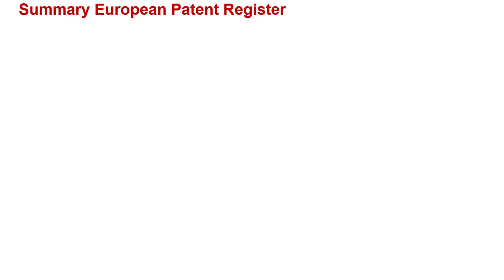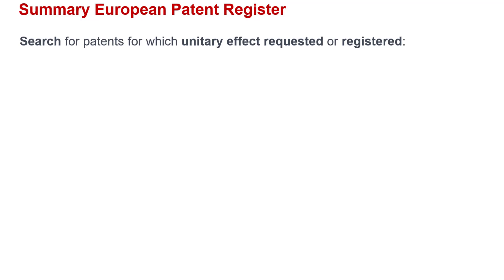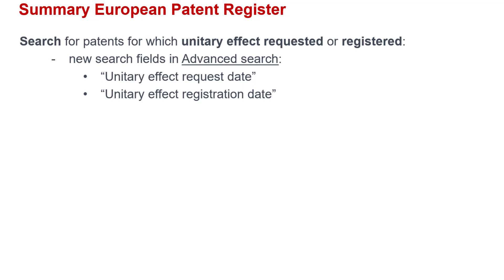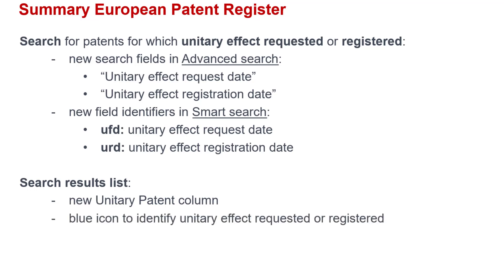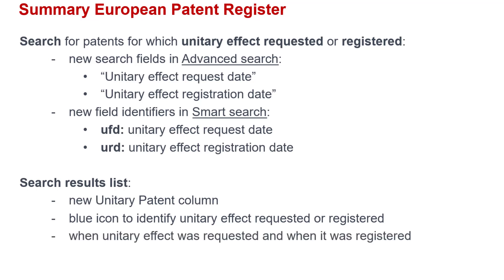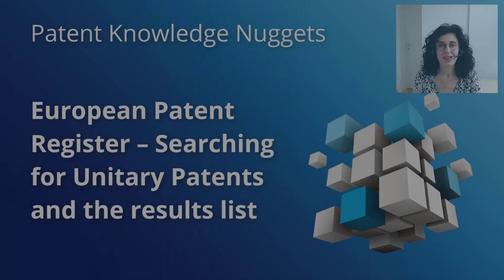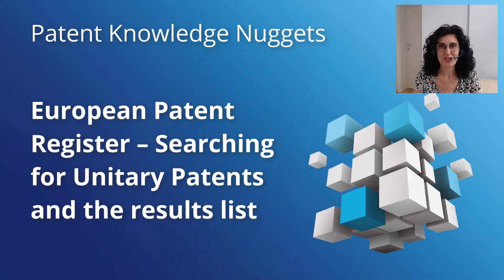So, as we have just seen, you can search the European Patent Register for patents for which unitary effect has been requested or registered, using either the new search fields in Advanced Search or the new field identifiers in Smart Search. In addition, the new unitary patent column in the search results list contains a blue icon to identify patents for which unitary effect has been requested or registered, and also indicates when unitary effect was requested and when it was registered if this already happened. And all this information can also be easily exported and shared. And this brings me, ladies and gentlemen, to the end of this video. Thank you for watching and have a great day!